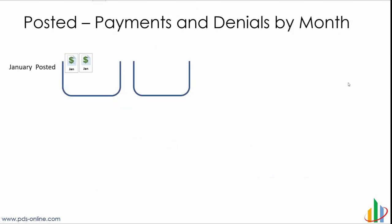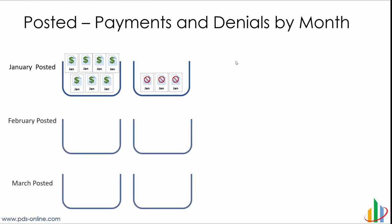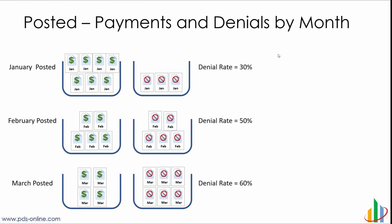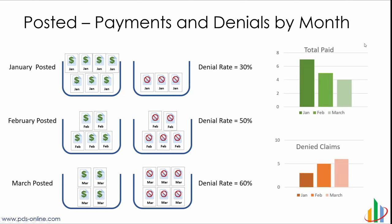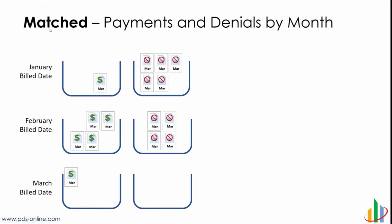To understand this, let's use a very simple illustration of PDS staging. Assume we had 10 claims billed out: we got reimbursed on seven and denied on three. Doing the same for February and March, it's easy to calculate our denial rate was 30% in January, 50% in February, and 60% in March. So the number of denials are clearly climbing. We purposely made exactly 10 claims in each month for illustrative purposes, and that's the key — we're looking at when things happen by posting date.